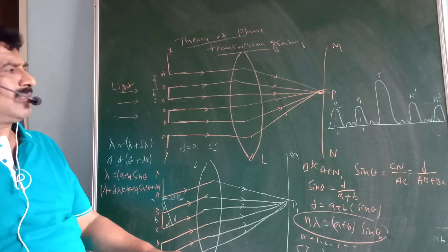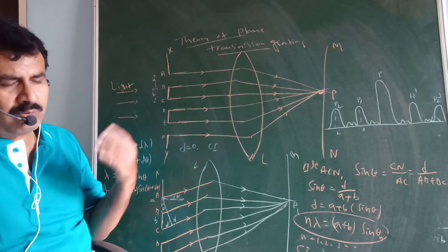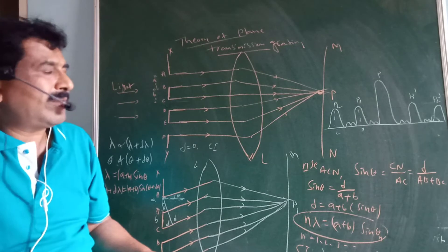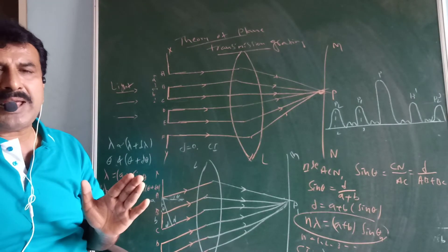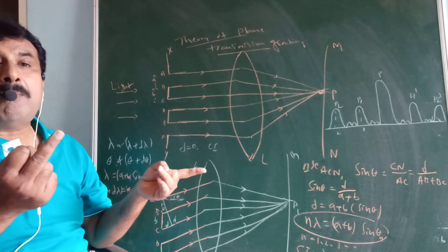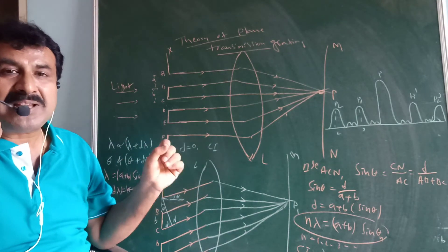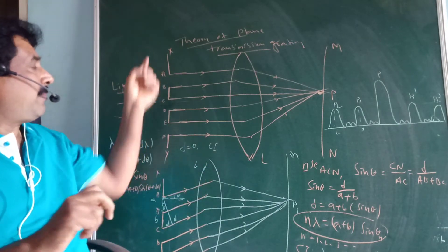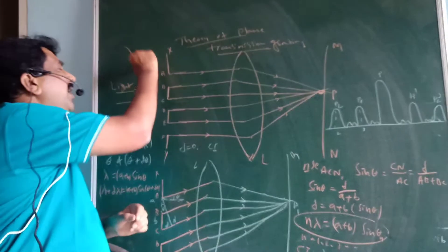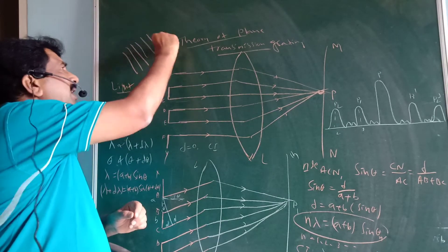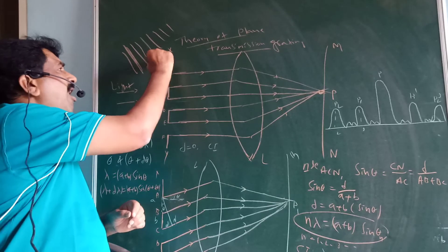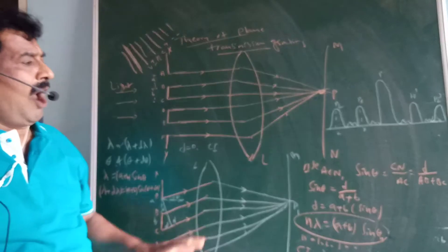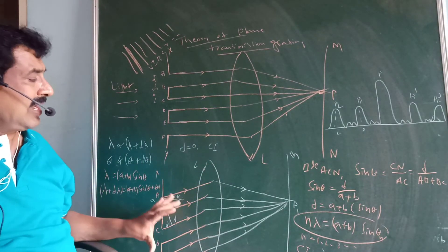This is the diffraction pattern produced by a grating using composite white light. The central band is bright. On either side of the central band, a number of principal maxima are produced. Different colors are produced in the order of VIBGYOR — violet, indigo, blue, green, yellow, orange, and red. This diffraction pattern with multiple colors on either side of the central bright band is produced by the grating when white or composite light is used.